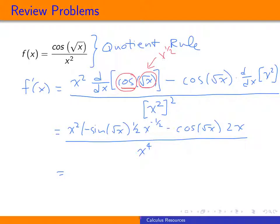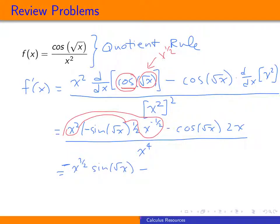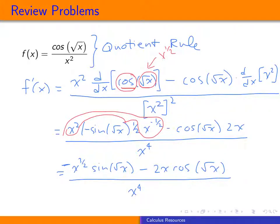Now we simplify. We multiply x squared by x to the negative 1/2 by adding exponents: 2 plus negative 1/2 gives x to the 3/2. That is being multiplied by negative sine of square root x. Then we subtract off 2x times the cosine of the square root of x, all over x to the fourth.